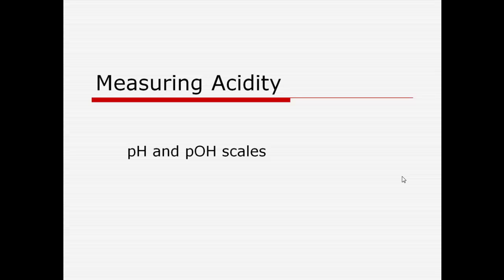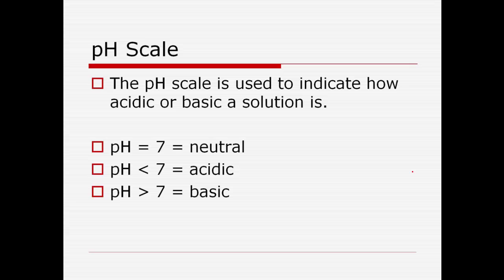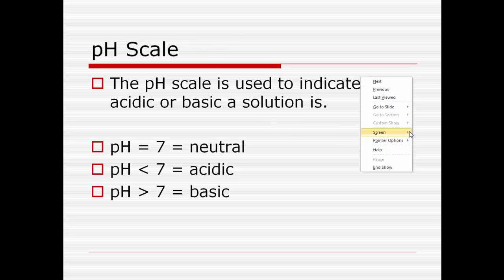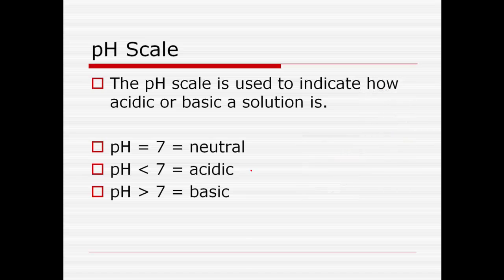Our goal for today is to understand and be able to perform calculations for the pH and the pOH scales. The pH scale is a way that we can use relatively simple numbers, 0 to 14, to describe the acidic or basic nature of a solution. A pH of 7 is a neutral solution. If the pH is lower than 7 we say the solution is acidic, and if it's greater than 7 we say it's basic, or alkaline.